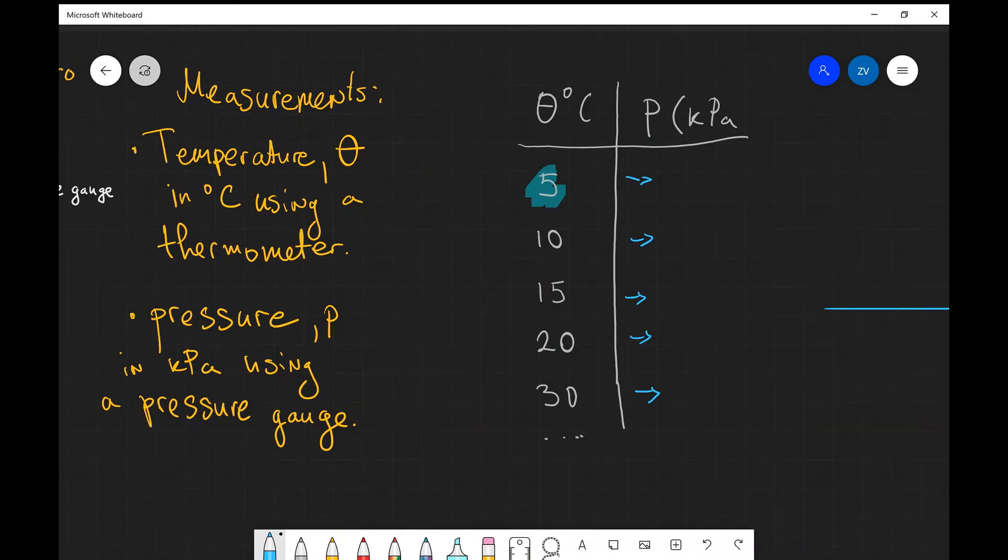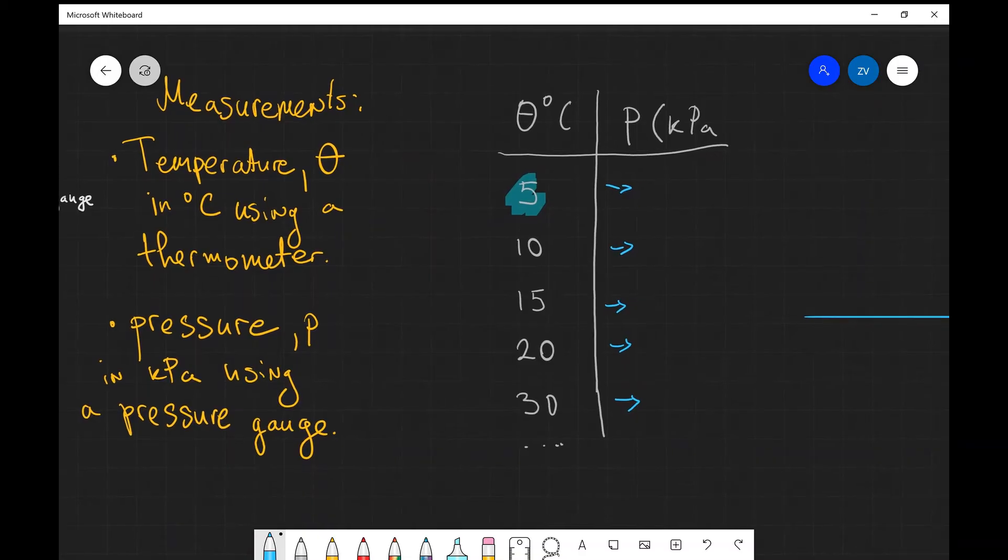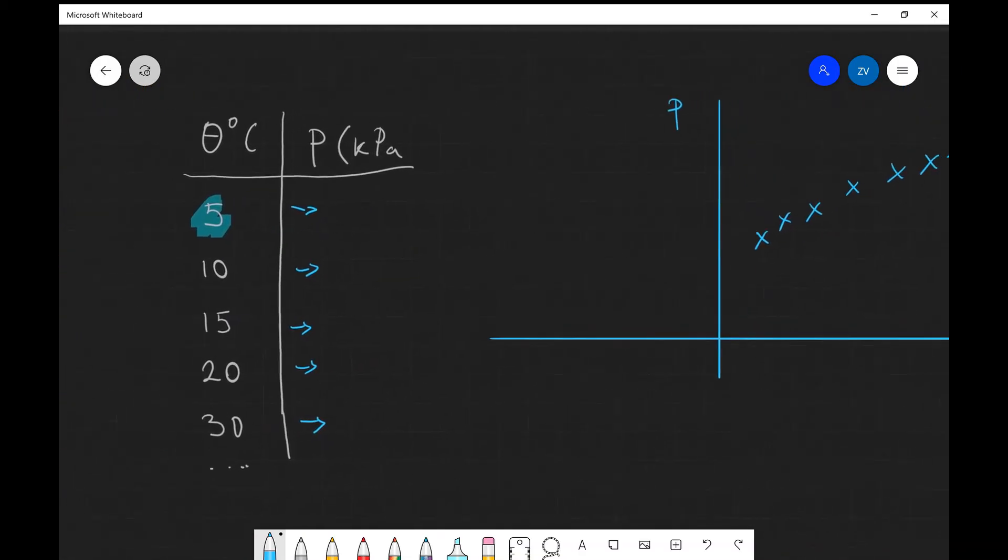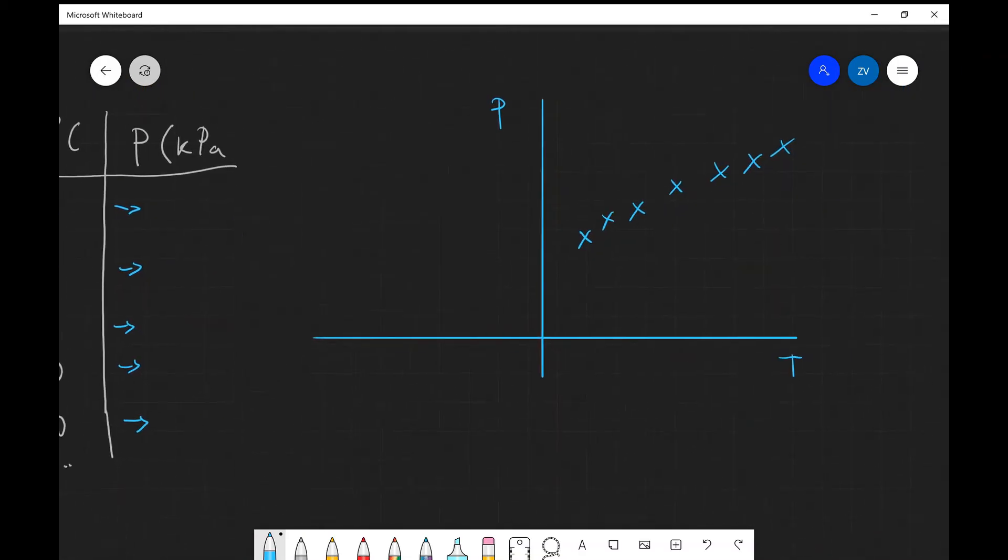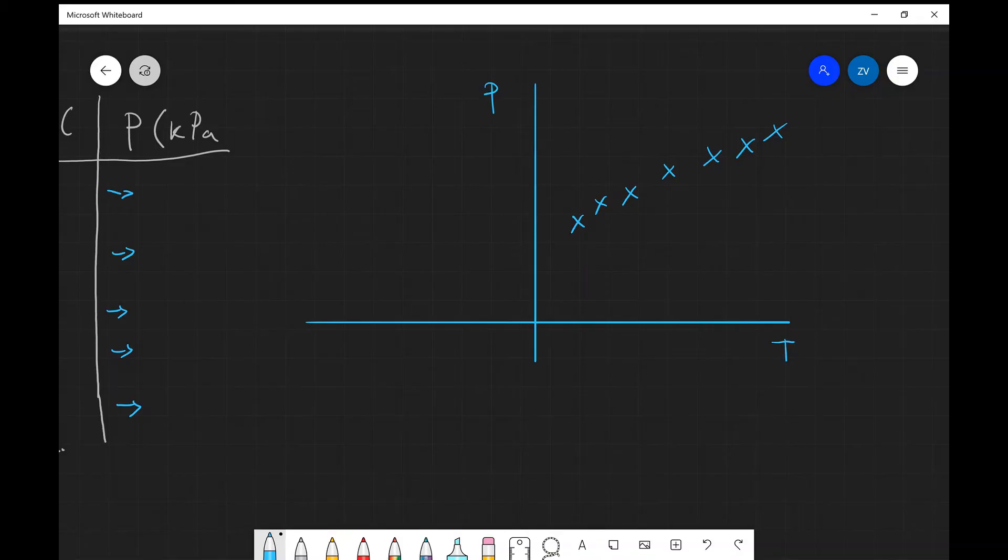Now after we have done our measurements, so we've done our experiment really carefully, we've stirred while we've been taking measurements to ensure this uniform temperature and we've taken very careful measurements, we've then plotted our points on a pressure against temperature graph so we can make a difference and we can use this graph